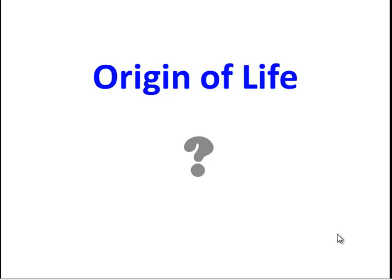In our unit on evolution, we've seen how one species can diverge into two new species. But a trickier question to answer is the origin of life. Where did that very first species come from? If all species come from other species, how do we explain the origin of the first living thing? And if all cells come from other cells, where did that first cell come from? That's a question we're going to tackle in this video on the origin of life.